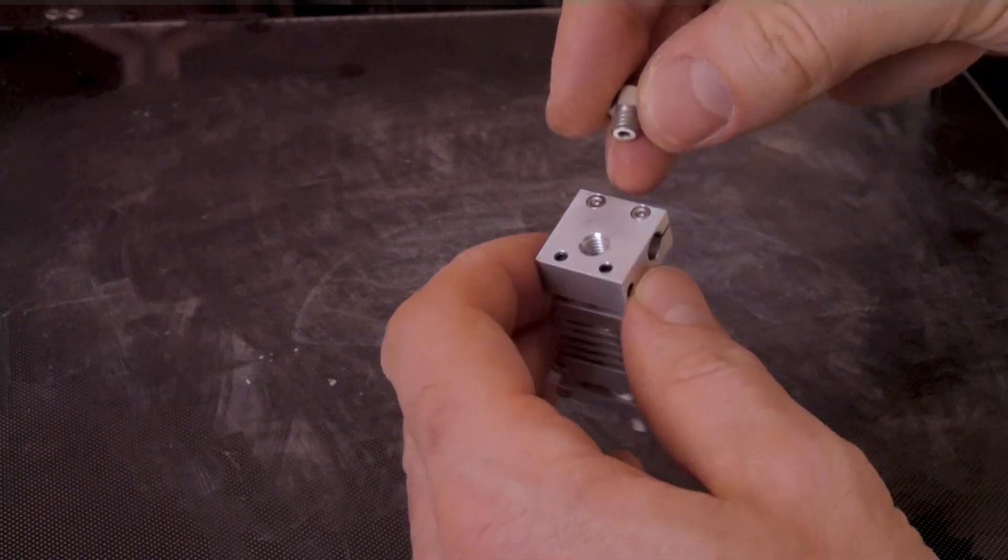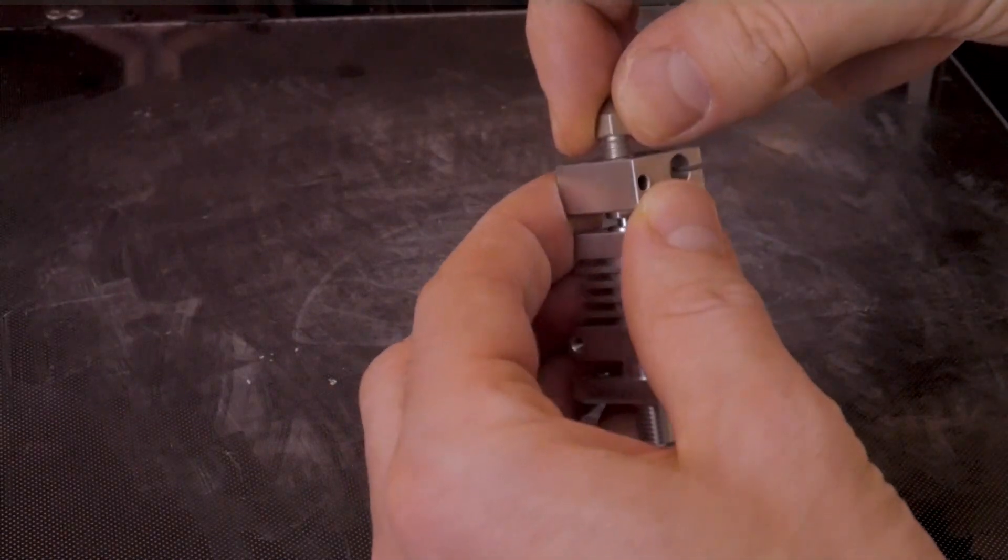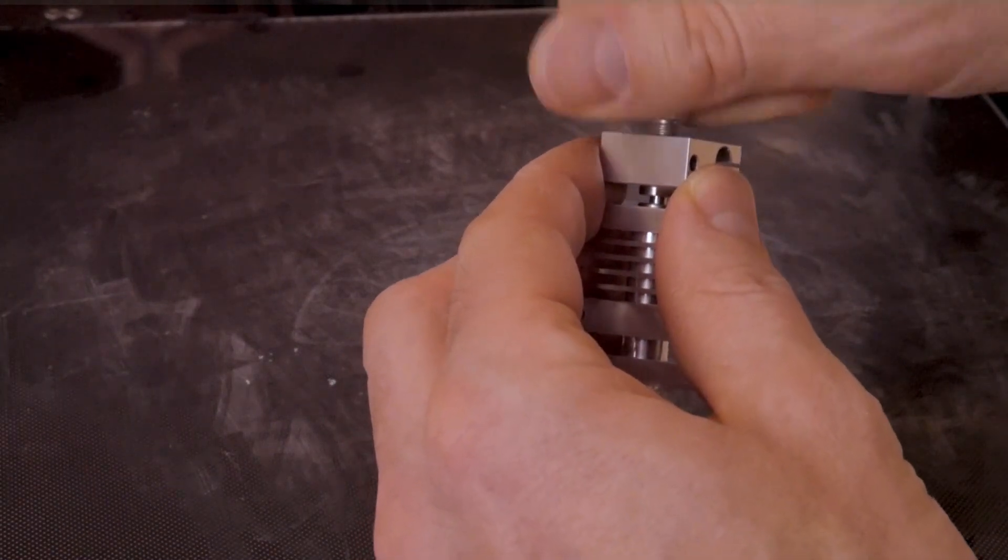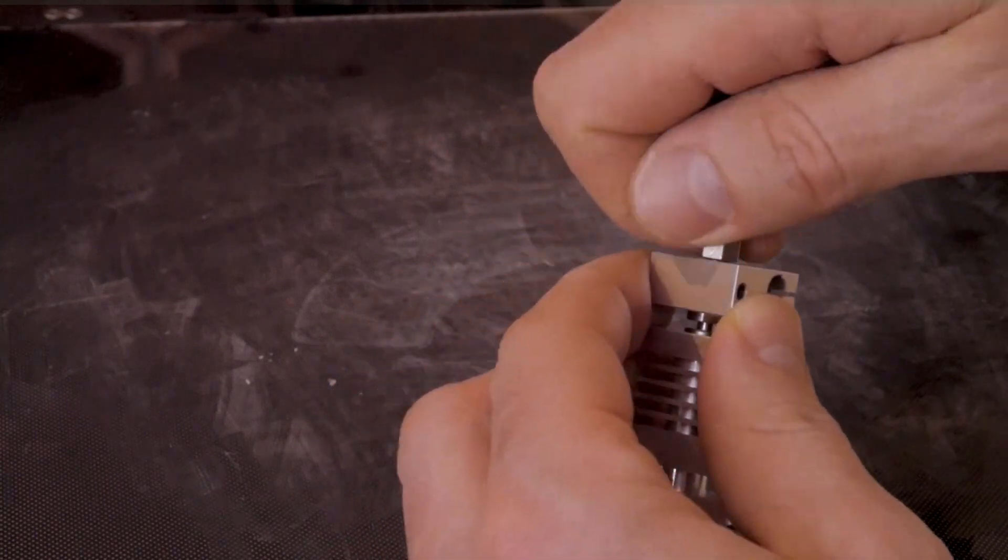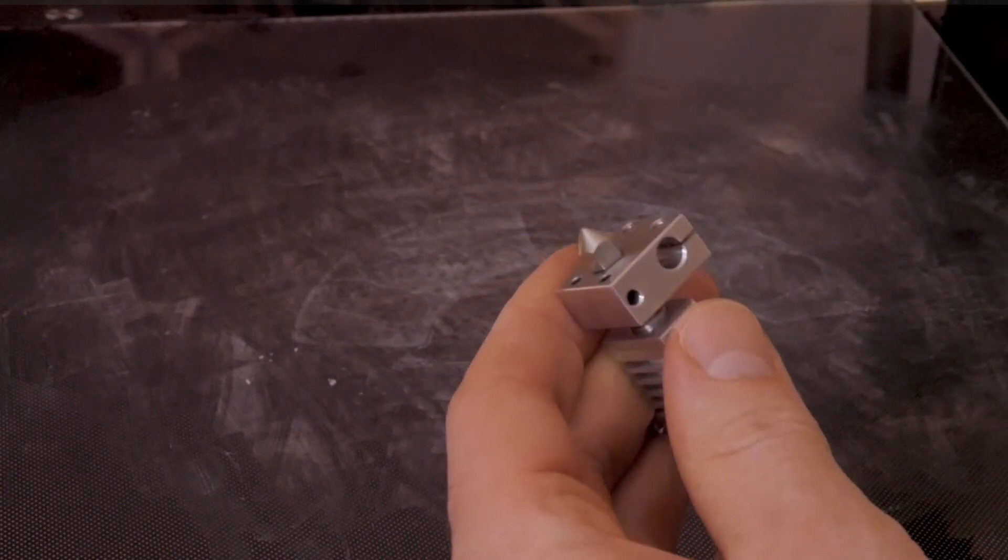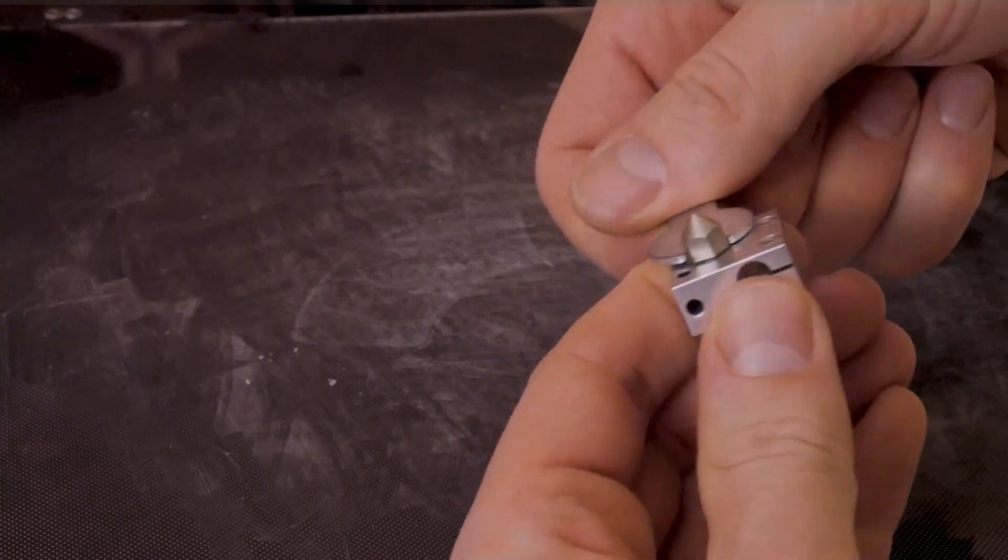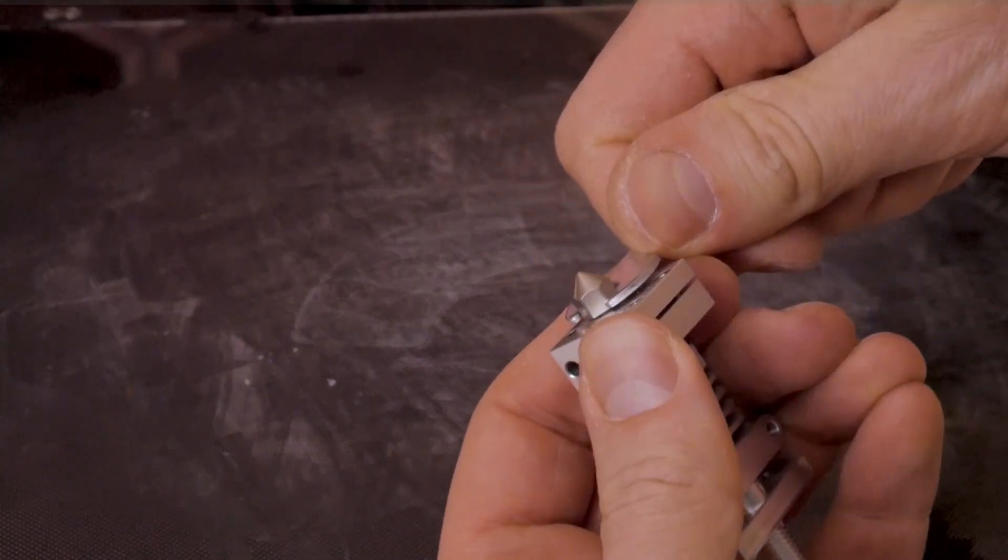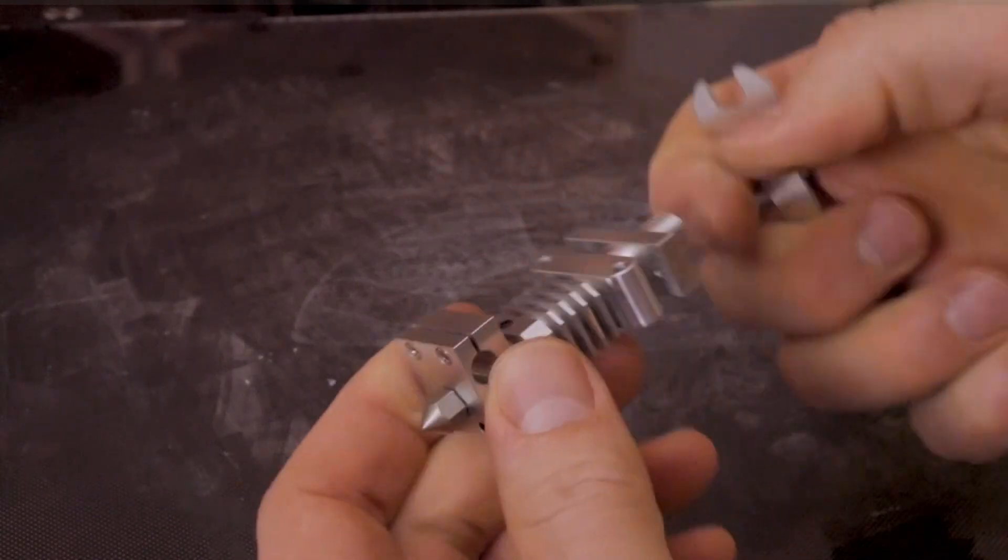Finally, we can take our nozzle and thread it into the bottom of the heater block. We can thread it in with our fingers first, and then using the included wrench we can just snug it down. Again, not too tight - we'll be tightening it later when the assembly is hot.